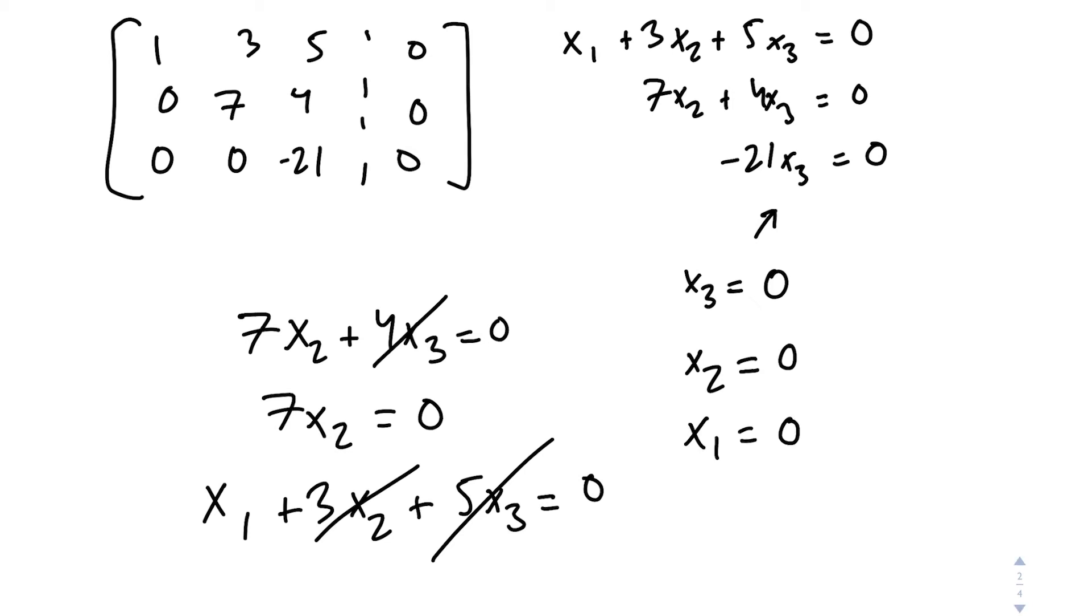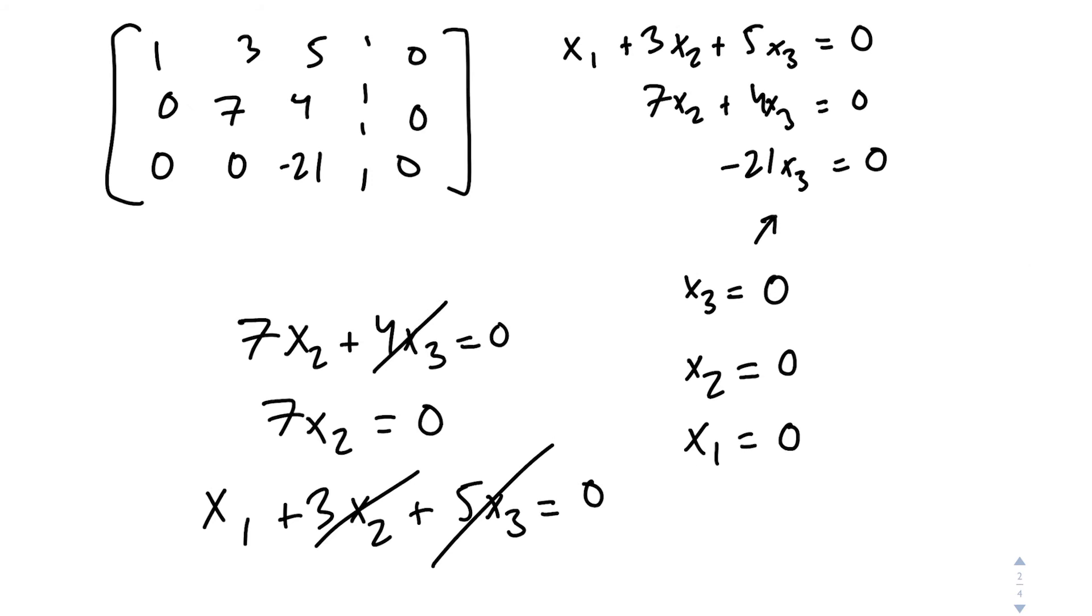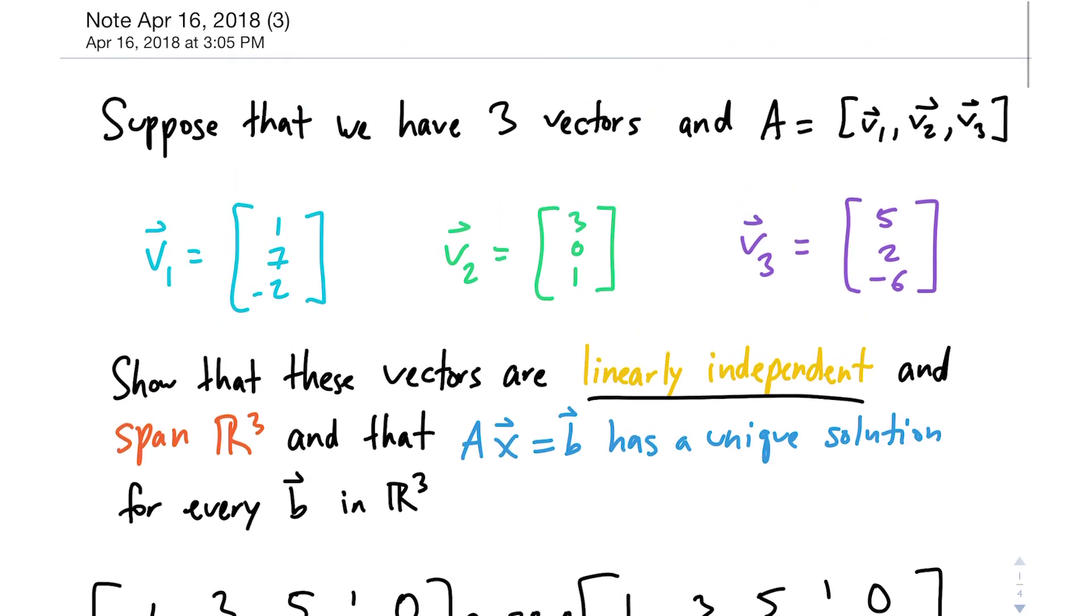So this is what we defined as the trivial solution. And because this is a triangular form, as you'll recall maybe, triangular forms only have one solution, and that is, in this case, the trivial solution. So we've determined that these vectors are linearly independent.